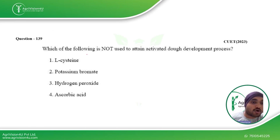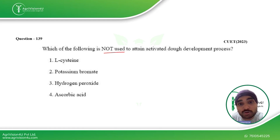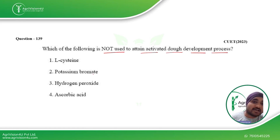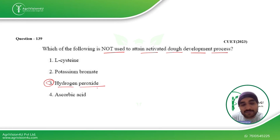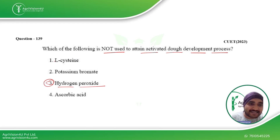Next, which of the following is not used to attain the active dough development process? Hydrogen peroxide is generally not used — as you know, it has bactericidal properties, so it will not be used in dough development. However, L-16, potassium bromide, and ascorbic acid can be used. So option 3 is the right answer for this question.